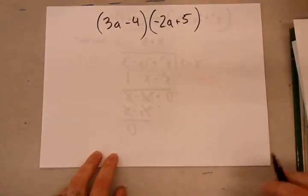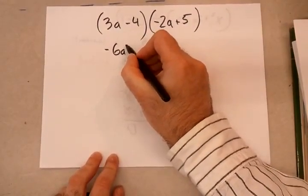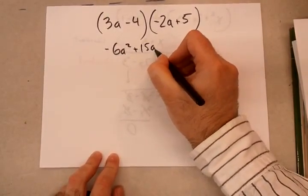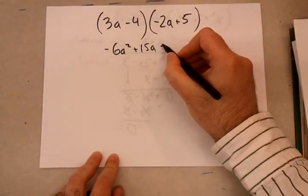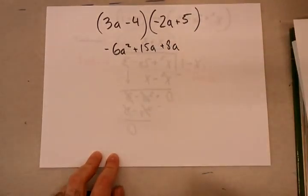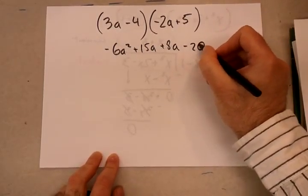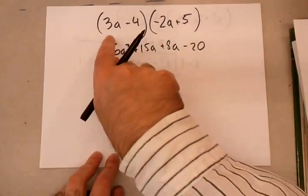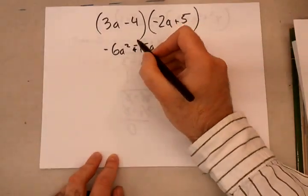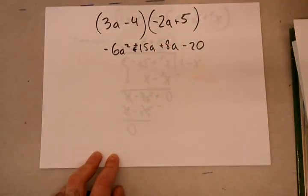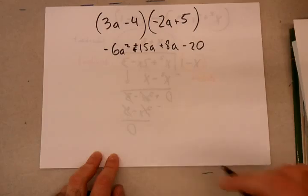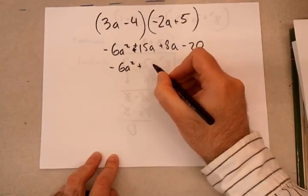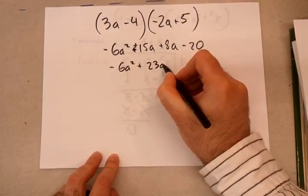First times first, so that's 3a times negative 2a, that's going to be negative 6a squared. Then 3a times 5, that is plus 15a. Then negative 4 times negative 2a, that's positive 8a. Then negative 4 times positive 5, that is a negative 20. I think I did my math right. Of course I didn't. That should be a negative here. 3a times negative. No, that is a positive. Yes, everything else looks good. So now I simplify it. And I end up with this.